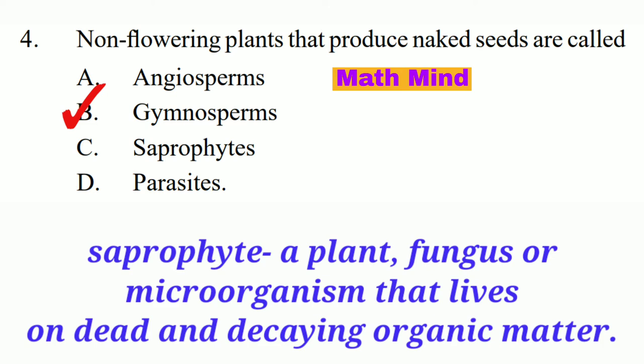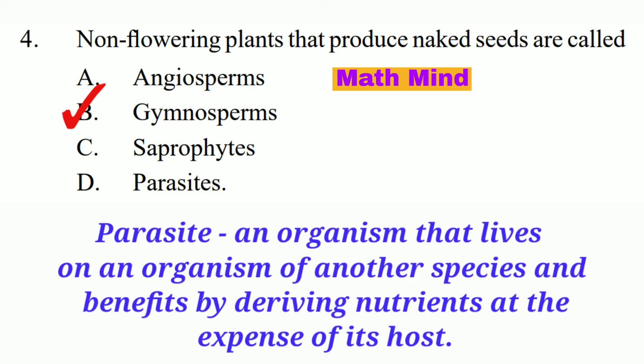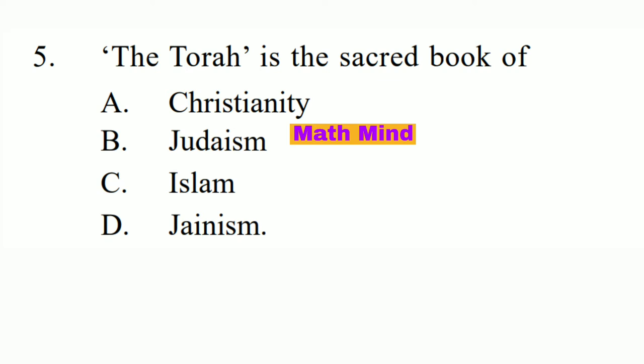A parasite is an organism that lives on an organism of another species and benefits by deriving nutrients at the expense of its host. Question No. 5. The Torah is a sacred book of which religion? Option B is correct: Judaism.